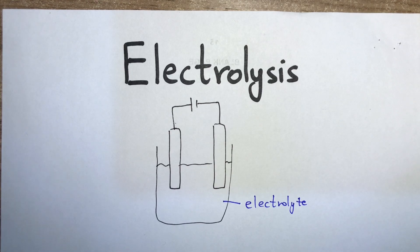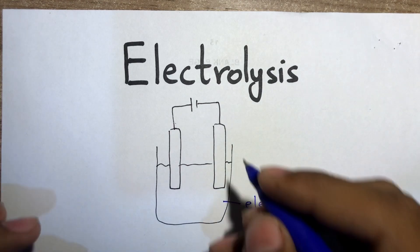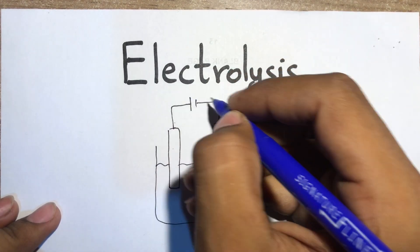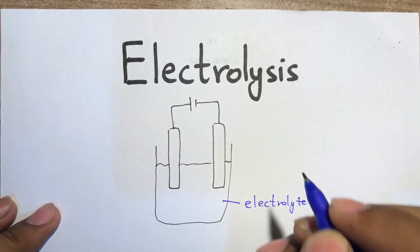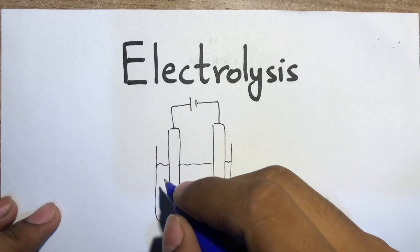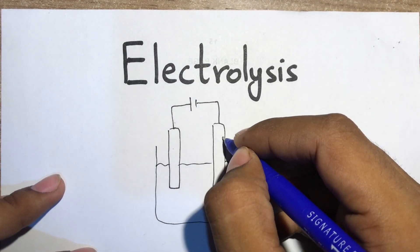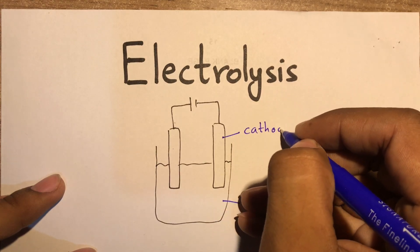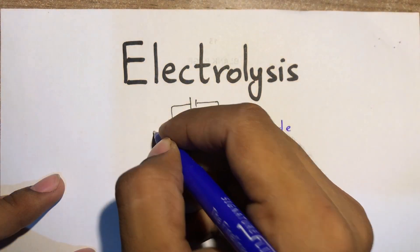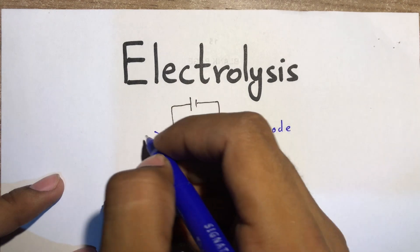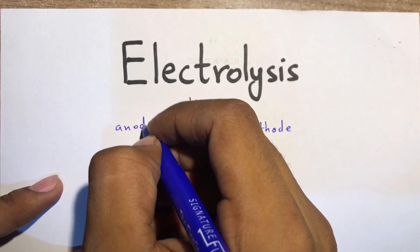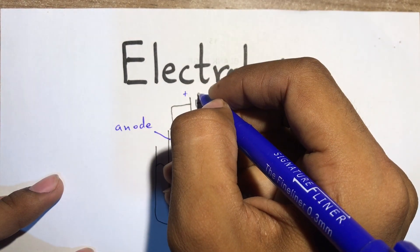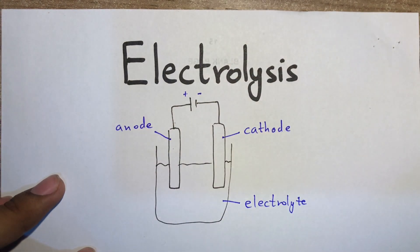The electrode connected to the negative terminal is called the cathode — that is the negative electrode. The electrode connected to the positive terminal is called the anode — that is the positive electrode.